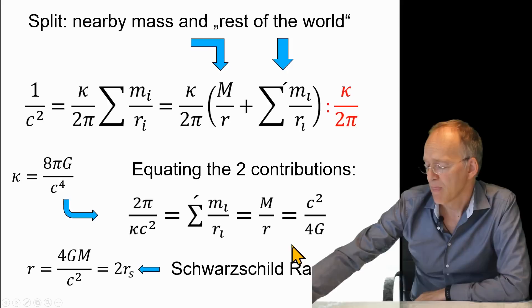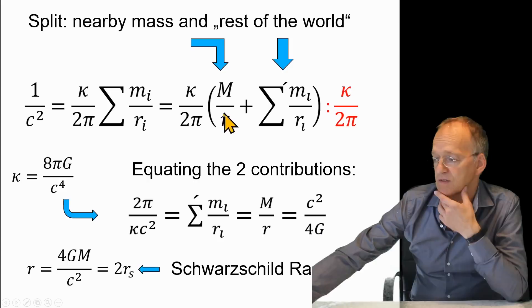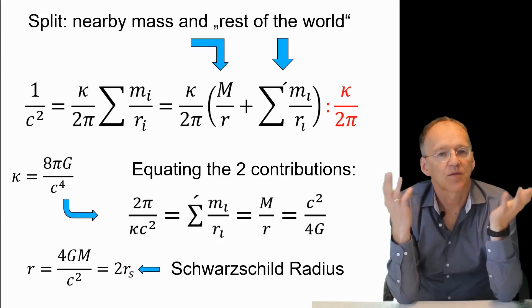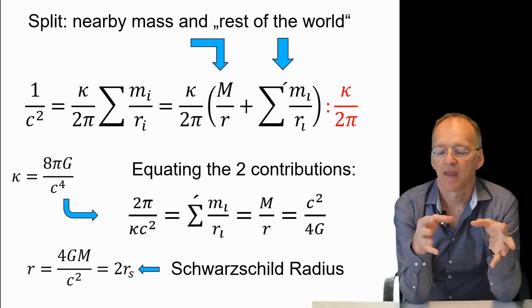If you put in the gravitational constant and Einstein's constant, then you arrive at this relation: M over r would be c squared over 4 times the gravitational constant. Or equivalently, at what radius would this happen? At a similar scale as the Schwarzschild radius. That means something interesting could happen here—it's a kind of reinterpretation of the Schwarzschild radius. Two times the Schwarzschild radius would be the distance where the effect of the nearby mass is as big as the rest of the universe.